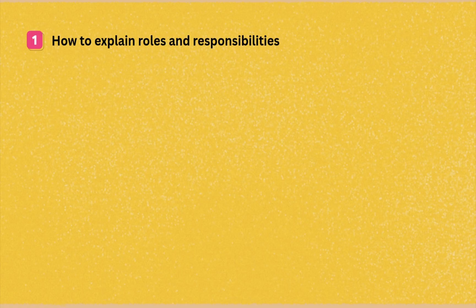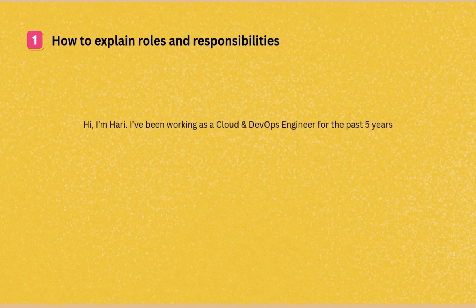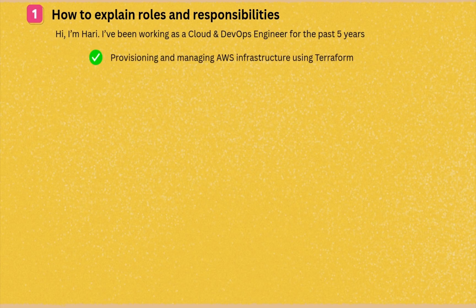I'm taking an example of a five-year experience guy working on AWS and DevOps. Hi, I'm Hari. I have been working as a cloud and DevOps engineer for the past five years, primarily focused on AWS and modern DevOps practices. My key roles and responsibilities include provisioning and managing AWS infrastructure using Terraform.